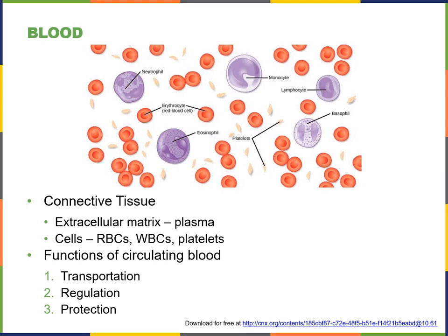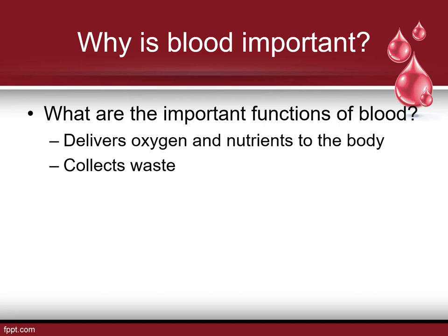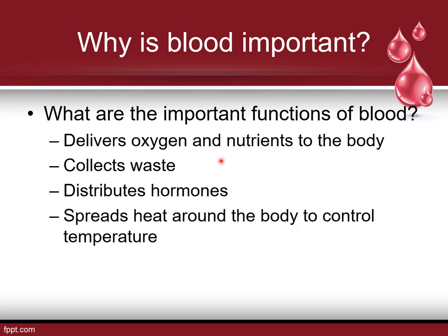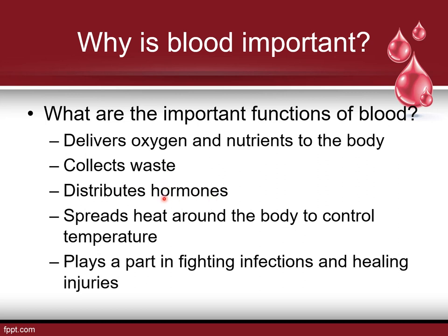Let's talk about what blood actually is. We know it's important, and it's actually a connective tissue — an extracellular matrix that has plasma and different cells within it. We have red blood cells, different types of white blood cells, and platelets. Blood is important for transportation, regulation, and protection. We deliver oxygen and nutrients to the body. It also collects waste, distributes hormones, spreads heat around your body to control temperature, and plays a part in fighting infections and healing injuries. Blood is a key player in maintaining homeostatic conditions that allow humans to live optimally.